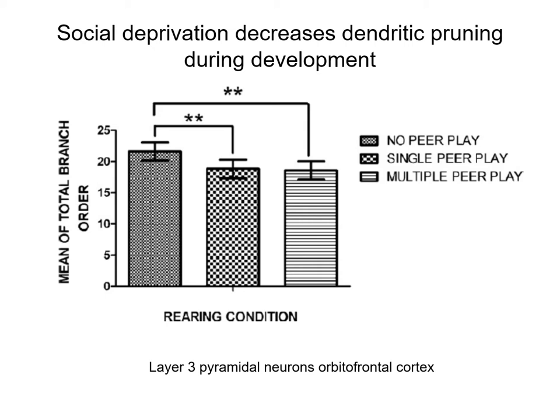Let's look at what happens to social deprivation and how it can impact dendritic branching. They're looking at layer 3 pyramidal neurons in the orbital frontal cortex, which is part of the prefrontal cortex. This is done in rats because it obviously can't be done in humans. The rats were socially deprived during puberty, because this is when social deprivation has the maximum impact on social behavior.